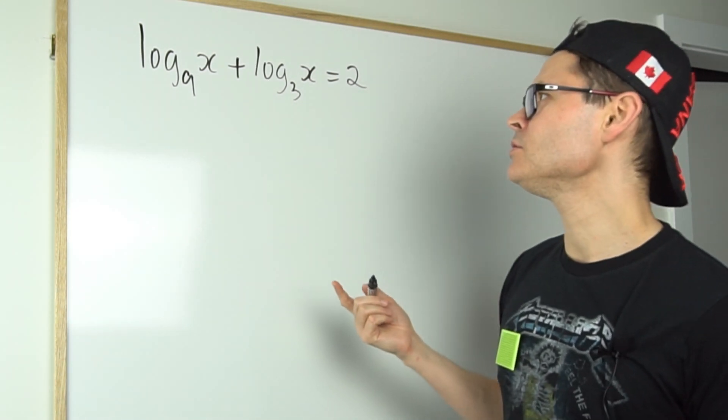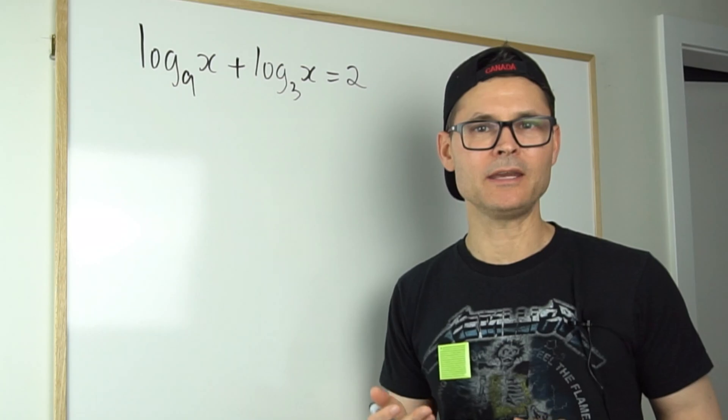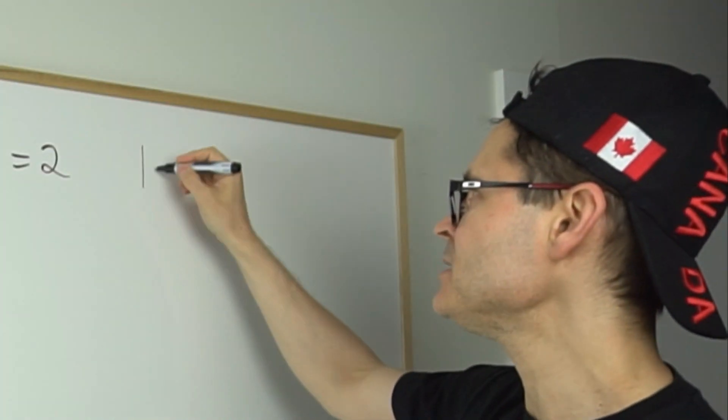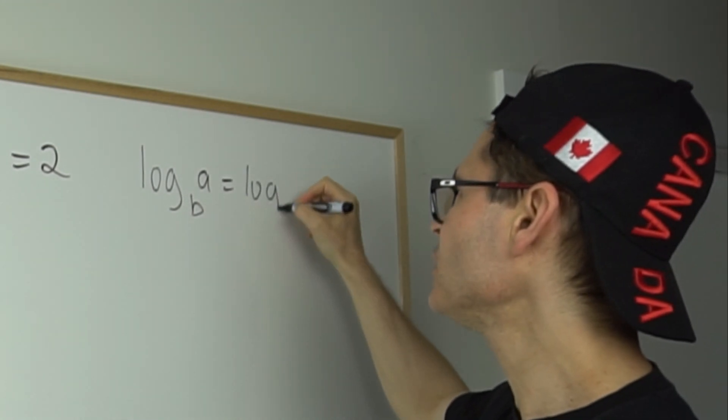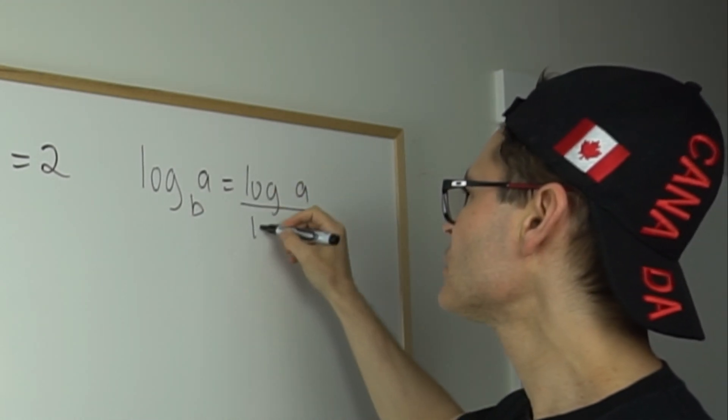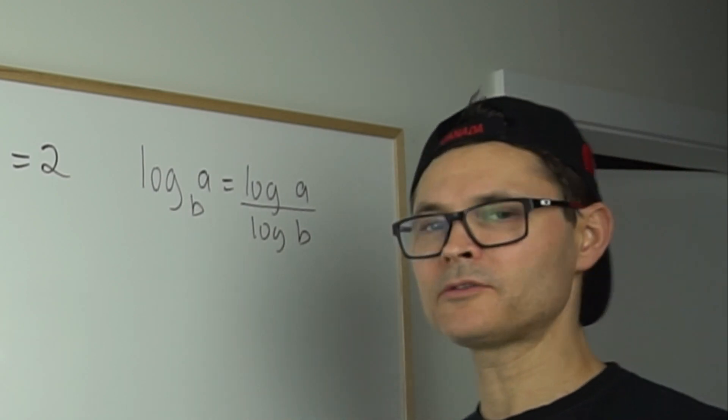One thing you can do is use change of base identity. So change of base identity just means that if I have the log of A base B, that's equivalent to the log of A over the log of B.